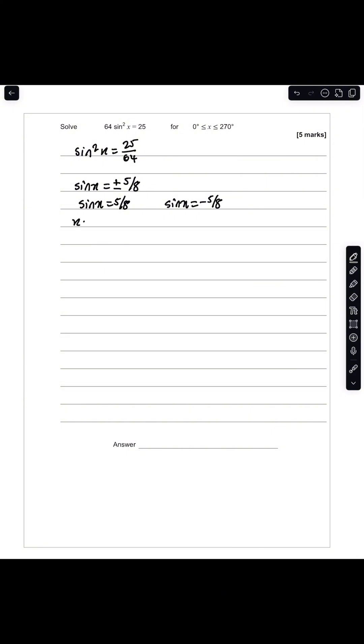To obtain the value of x, I take the sine inverse of both sides. So sine inverse of 5 over 8, when you put this into your calculator, gives you a value of 38.68 degrees to two decimal places.